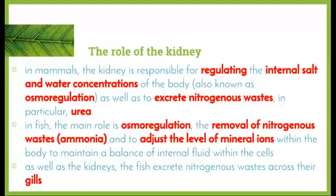The role of the kidney in fish and mammals is dependent on their environment. In mammals, the kidney is responsible for regulating the internal salt and water concentration of the body — osmoregulation — as well as excreting nitrogenous wastes, in particular urea. In fish, the main role is also osmoregulation — regulating salt and water concentrations.